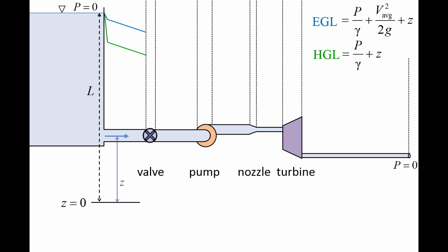At any point along the flow, the distance from the ground to the fluid is the elevation head z. The distance from the fluid to the HGL curve is the pressure head, p over gamma, and the distance between the HGL and EGL curves is the velocity head, v average squared over 2g.